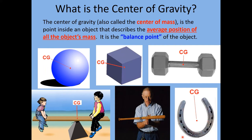One way to verify this would be to place the horseshoe on a light piece of cardboard laid horizontally on a table and find the balance point by trial and error, trying to balance it with your finger. You would find that your finger needs to be on the cardboard at a position somewhere around the CG location shown.